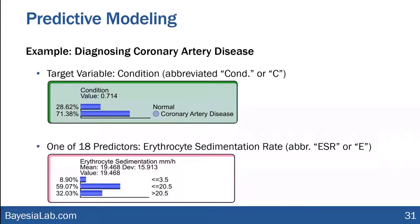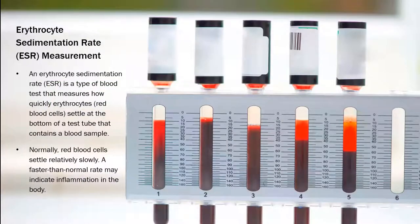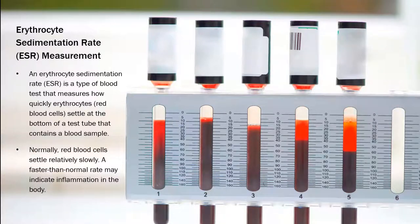What is erythrocyte sedimentation rate? It's a type of blood test that measures how red blood cells settle at the bottom of a test tube. That's an indicator of whether your body has inflammation, and that in turn could be a predictor of coronary artery disease. Now we want to figure out precisely how that works.